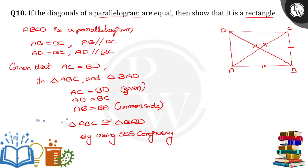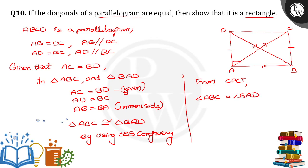So we can say that triangle ABC is congruent to triangle BAD by using SSS congruency. By CPCT — corresponding parts of congruent triangles — we can say that angle ABC is equal to angle BAD. Take this as equation number 1.